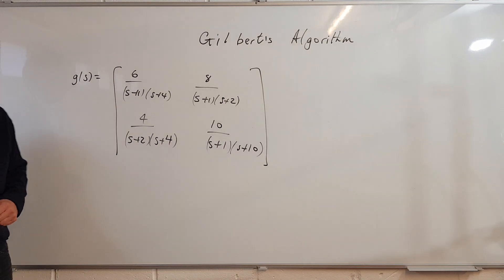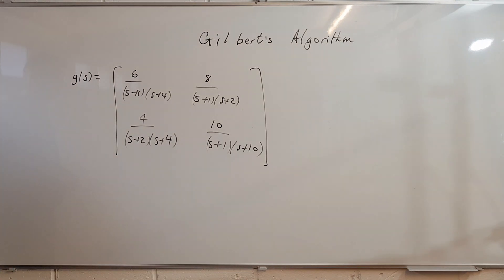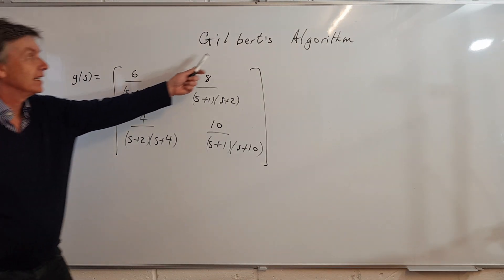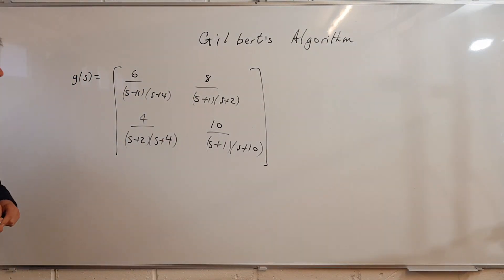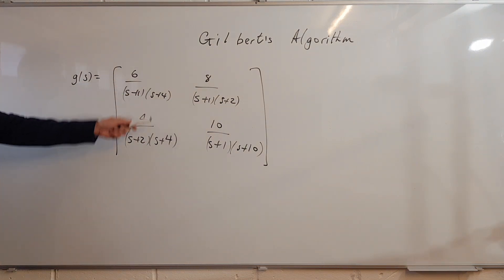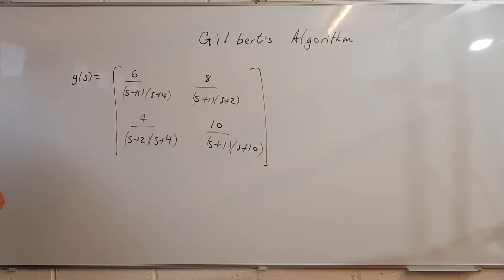Good afternoon. Today we're going to look at Gilbert's algorithm for working out the minimal state-space realisation of a multivariable transfer function.